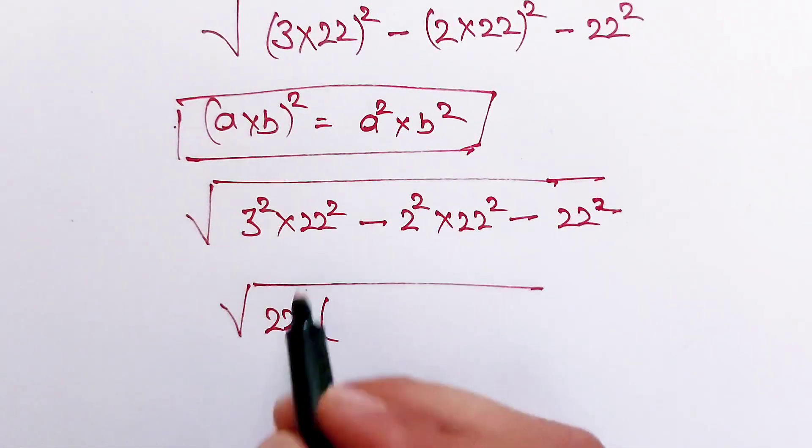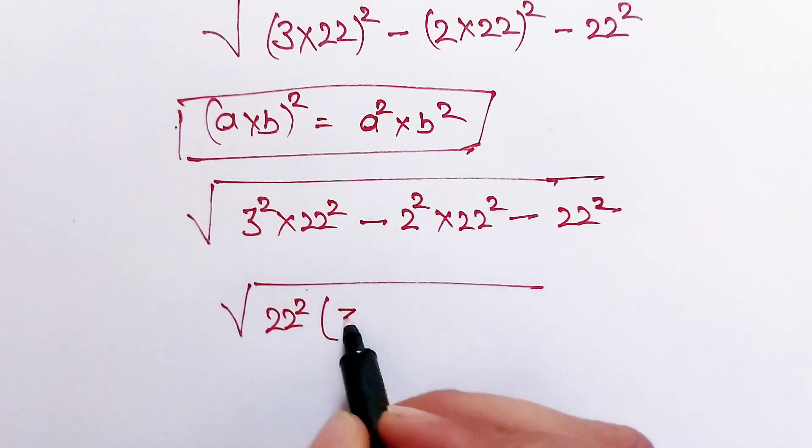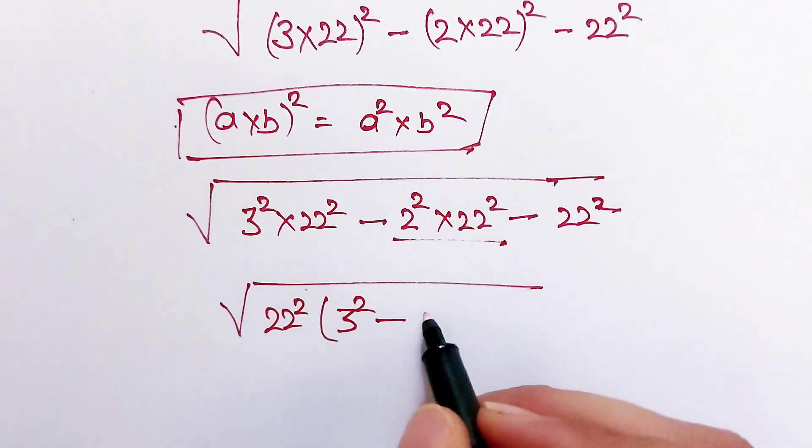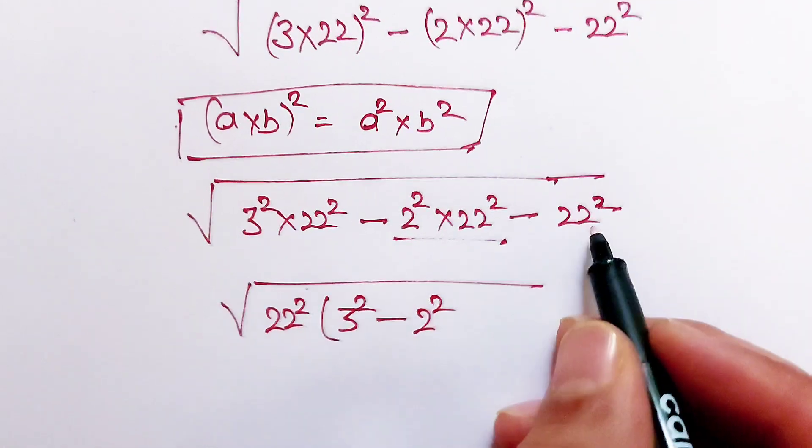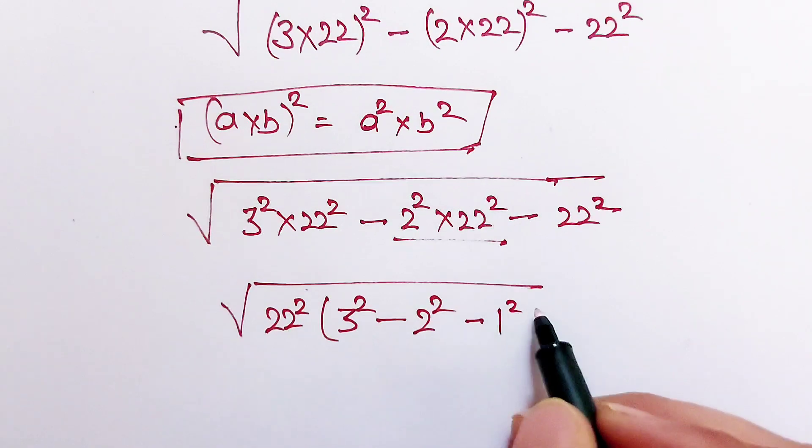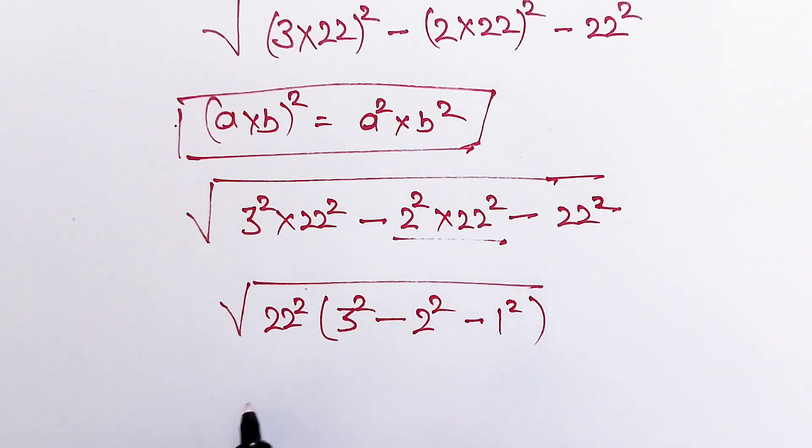Here if we divide by this number what we get, this squared. This divided by this number what we get, 2 squared, and this divided by this number what we get, 1 squared.